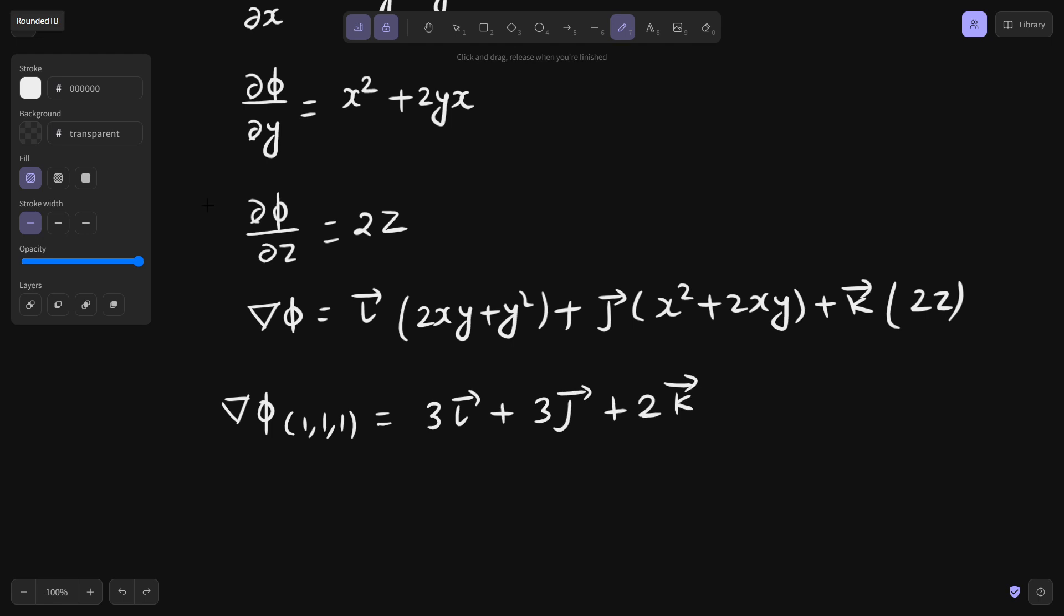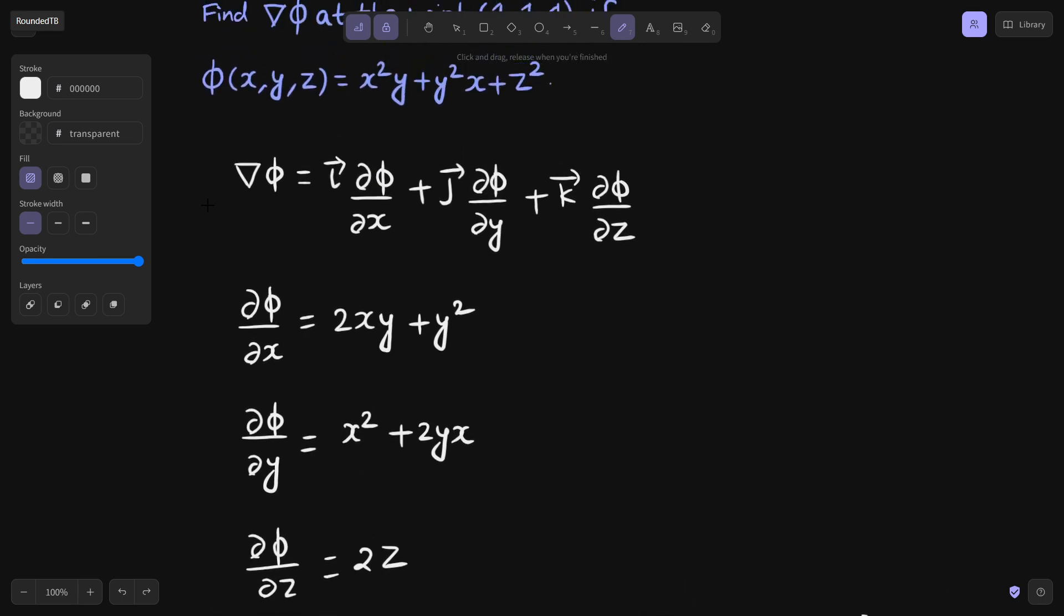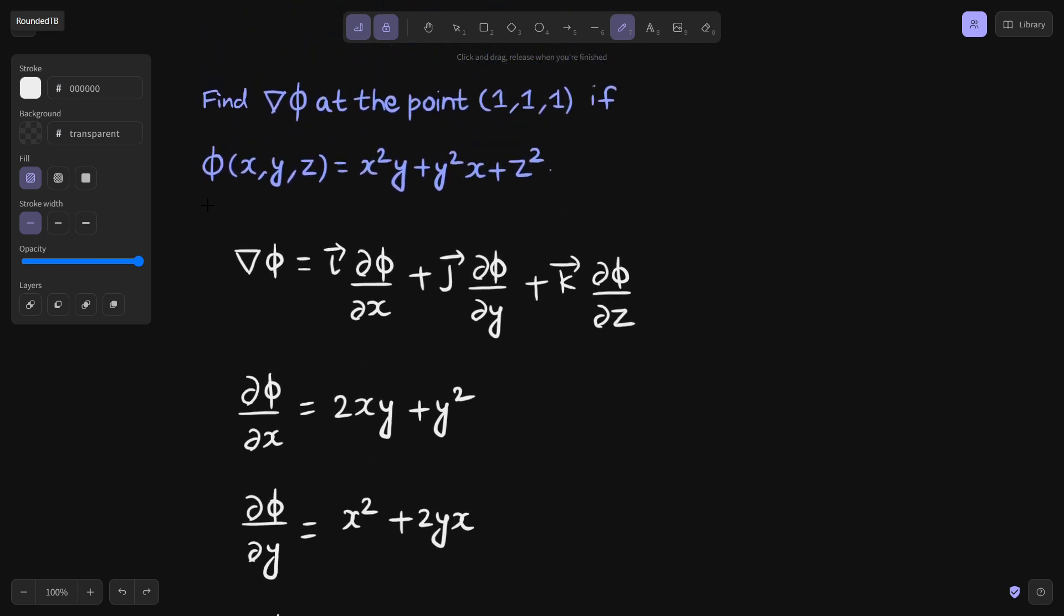So this is your final answer. You need to find gradient at the particular point (1,1,1) and this is your answer. It's a very easy concept and solving it is also easy once you know the concept of partial differentiation. Thanks again.